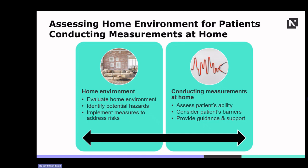When patients conduct measurements at home, assessing their environment is crucial. Factors such as accessibility, hygiene and safety must be considered. Evaluate the patient's home environment for factors that may affect measurement accuracy and safety, such as lighting conditions, cleanliness and accessibility. Identify potential hazards such as slippery floors, obstacles and inadequate ventilation. Implement measures to address identified risks such as recommending adjustments to home layout, providing guidance on proper equipment usage and storage, and advising on infection control practices.